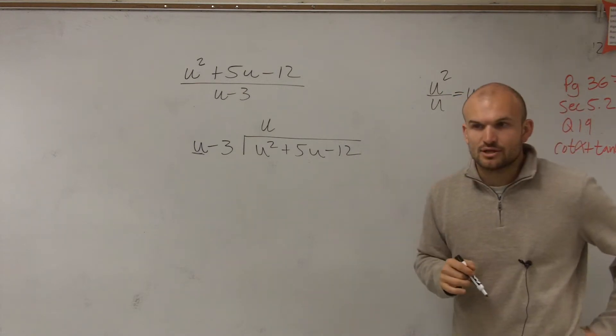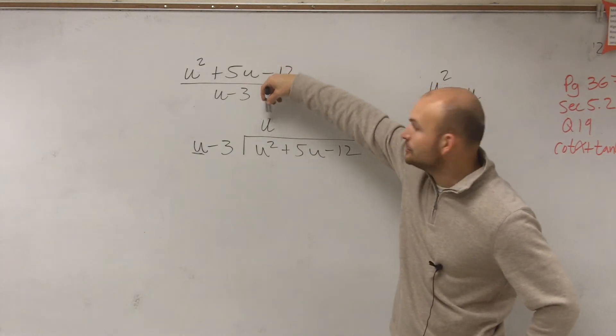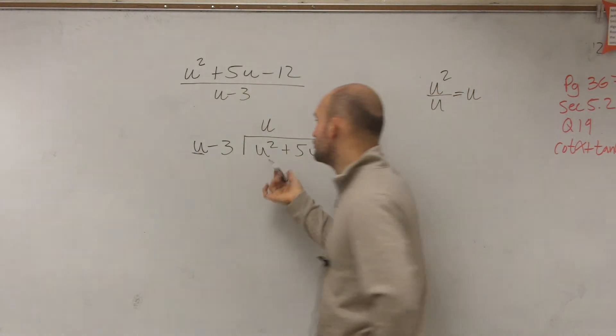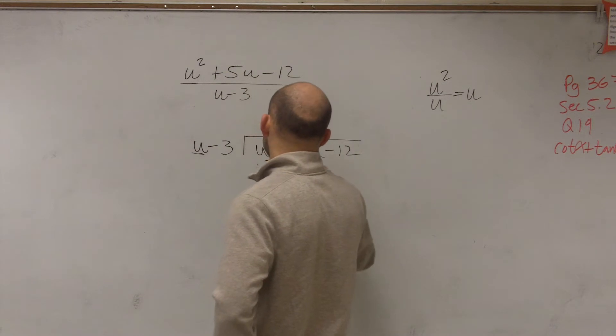Then the important thing about using long division is you need to make sure when you're writing it down that you multiply u times both terms of your divisor. So u times u is going to be u squared, u times negative 3 is negative 3u.